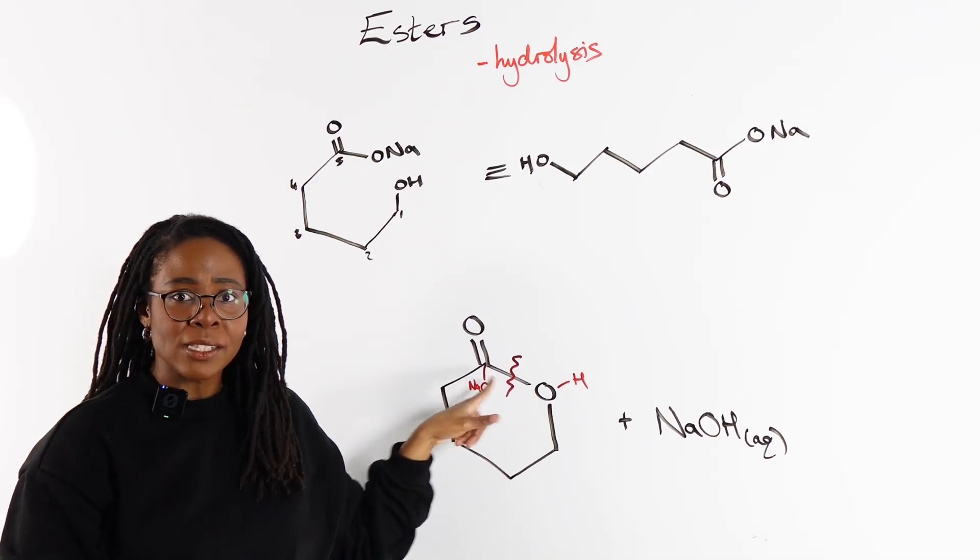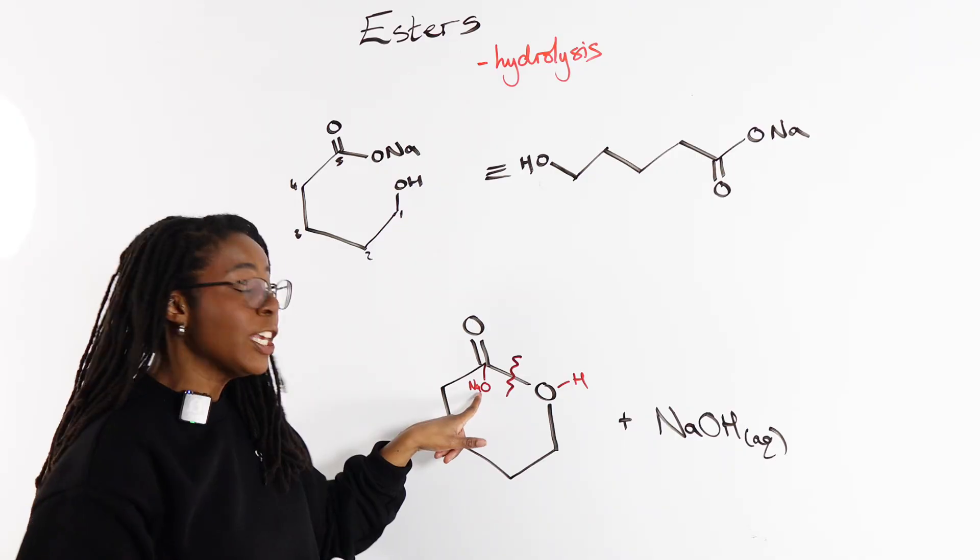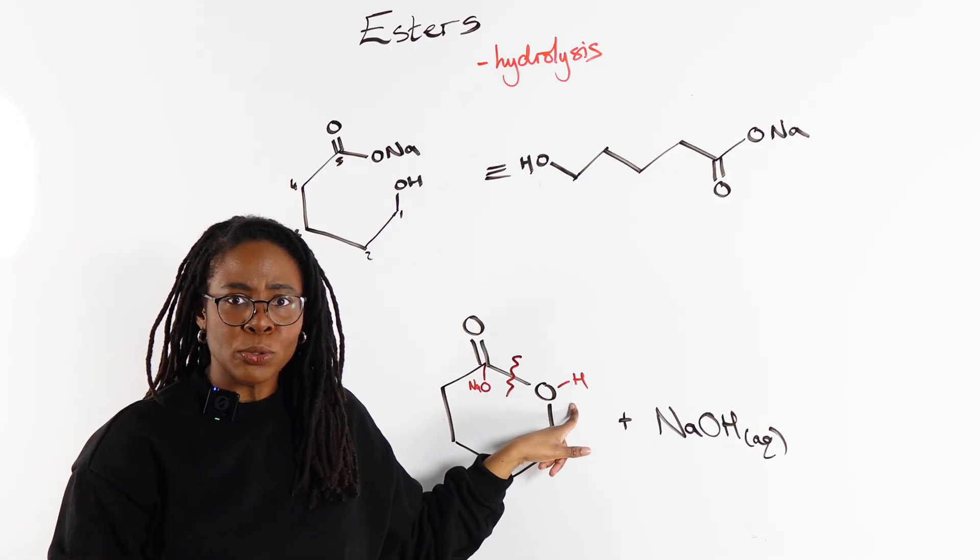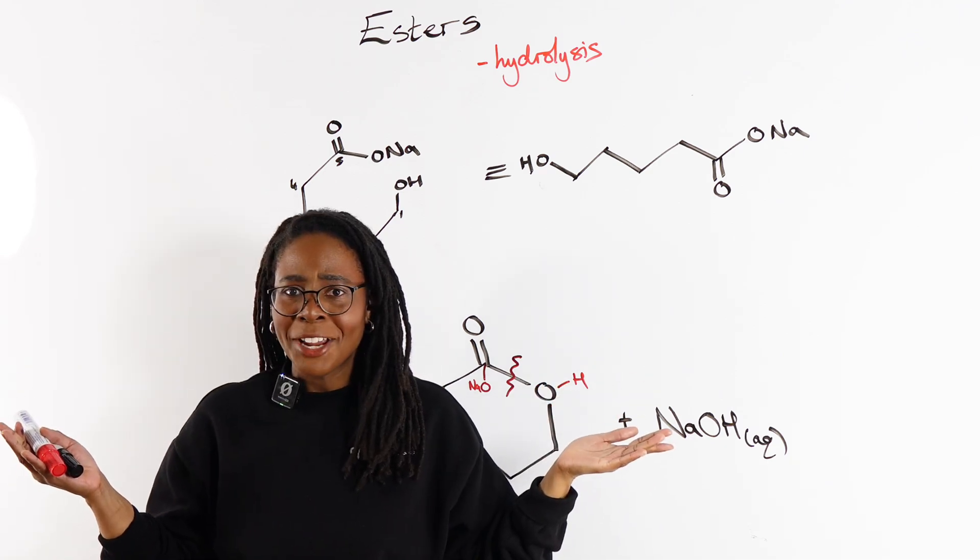Or we could have drawn that upside down or left to right or back to front. The key is: look for your ester bond—that's your C-O-O bond. Give the OH or the ONa back to the C double bond O, give the H back to the O, and then you're done. Hopefully that was nice and straightforward.